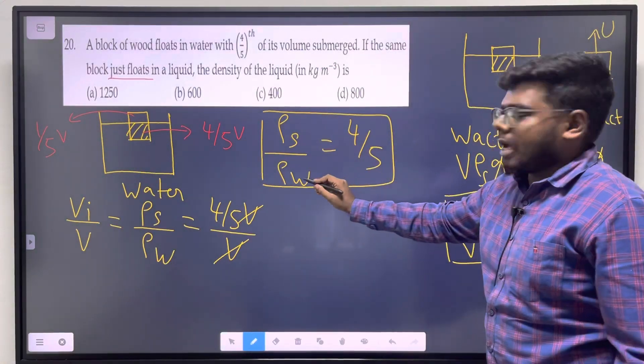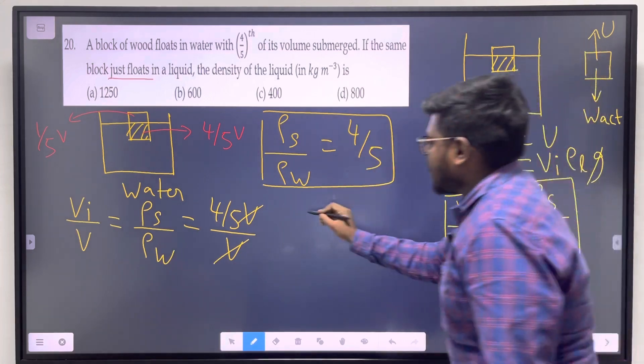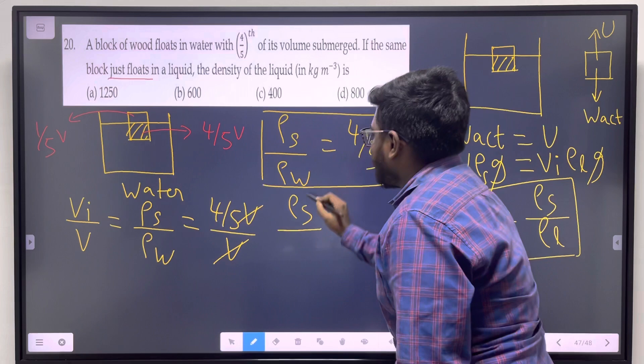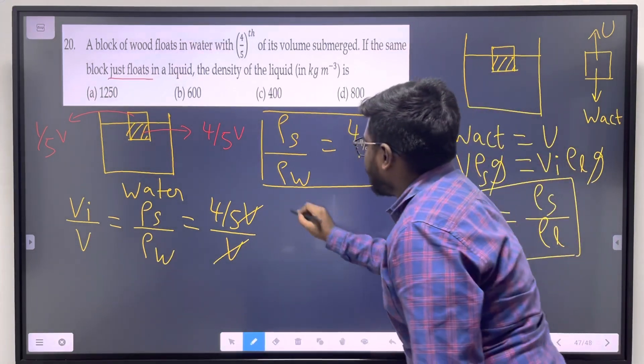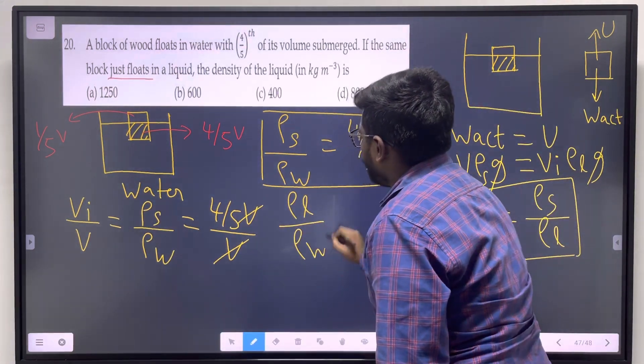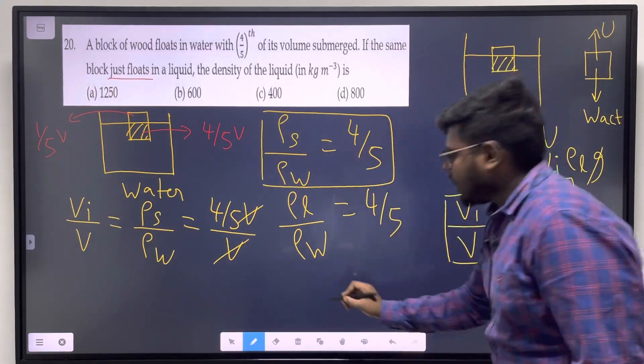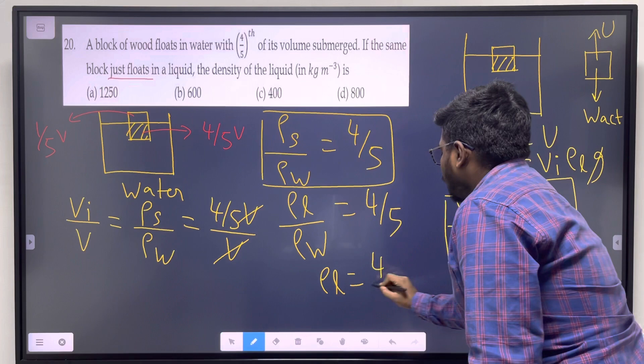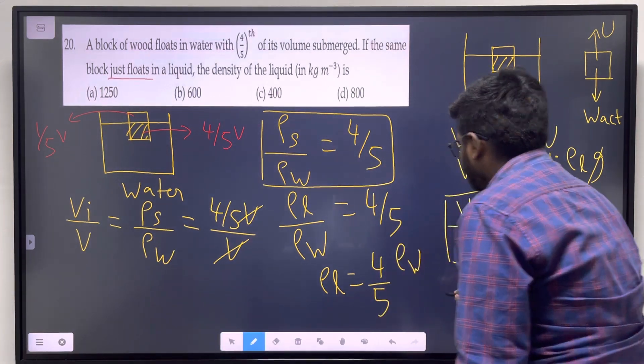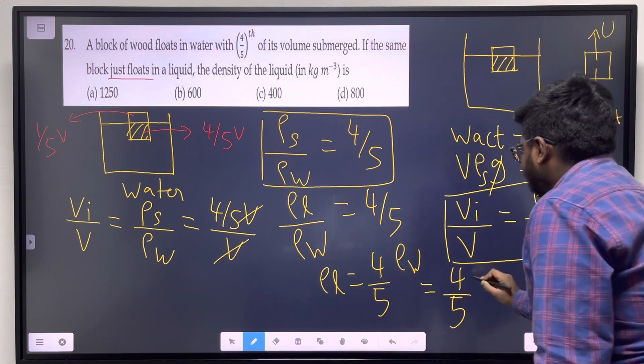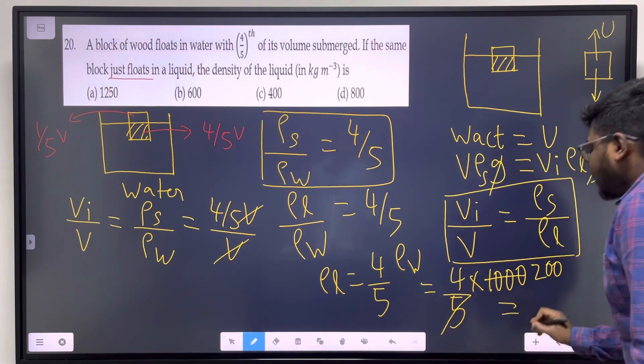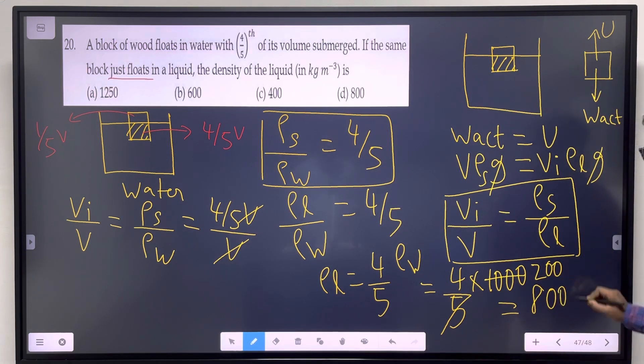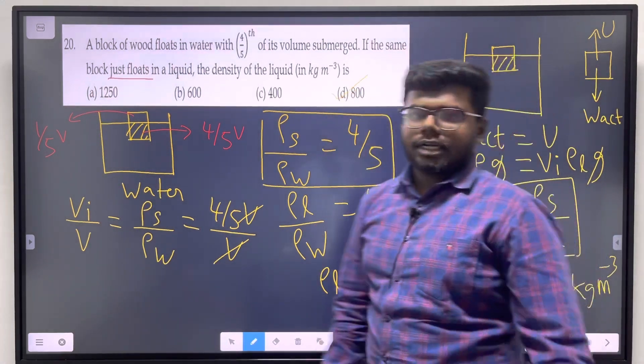Since ρ_s/ρ_w = 4/5 and ρ_s = ρ_l, we have ρ_l/ρ_w = 4/5. Therefore, density of liquid equals 4/5 times density of water, which is 4/5 times 1000, giving us 800 kg/m³. The answer is option D. Thank you.